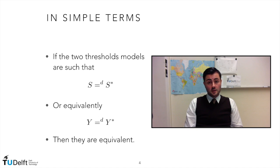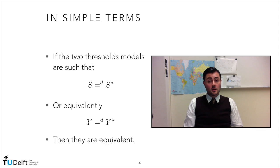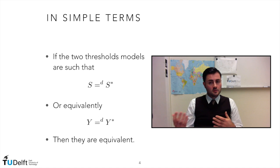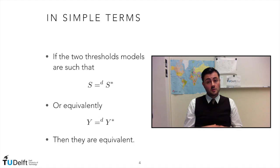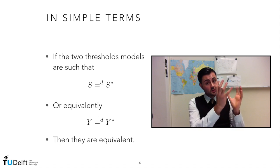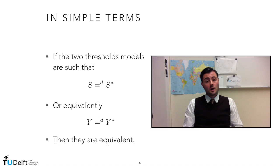We can say that the two threshold models are equivalent if the two state vectors are equivalent, because they are defined starting from the state vectors. The two default indicator vectors are equal in distribution, so their joint distributions are the same.